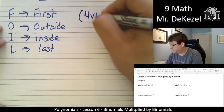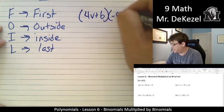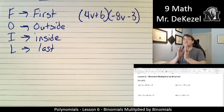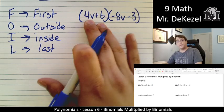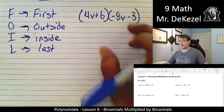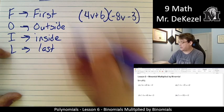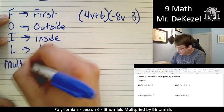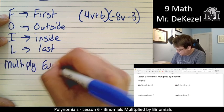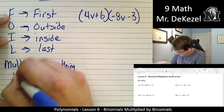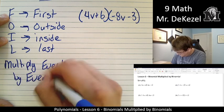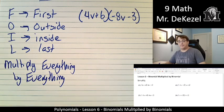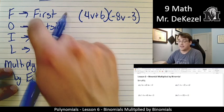The first one is (4V + 6)(-8V - 3). So the brackets are right together, which means we're multiplying this binomial by this binomial. And essentially, what we need to do, another way to look at this, is that we need to multiply everything by everything. Everything in the first bracket needs to be multiplied by everything in the second bracket, and this is a way to do that.